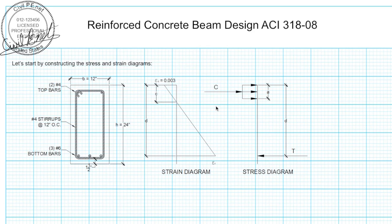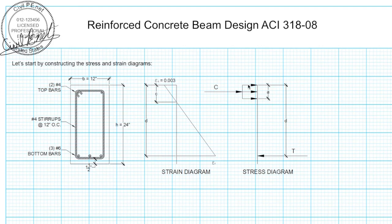We're going to solve for c using equilibrium from our stress diagram. In the stress diagram, T represents the tension force exerted by our steel, and C is the combined resultant compression force in the concrete over the area in compression. There is a depth a which is a little bit shallower than depth c. This is the Whitney stress block approximation — it approximates the stress in the concrete over the compression zone with a rectangle, versus the parabolic shape it actually is, simplifying our calculations.